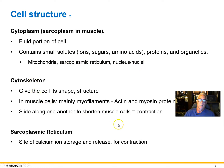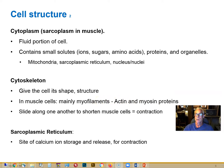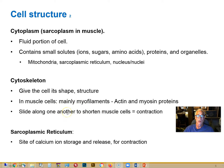The cytoskeleton gives the cell its structural integrity. The cell membrane is just a seal, but the cytoskeleton is the structural scaffolding of the cell. In muscle cells it's mainly myofilaments — actin and myosin — though other cytoskeletal proteins are found in other cells. The actin and myosin in muscle cells slide along one another using energy to shorten the cells. That's what a muscle contraction is: the so-called sliding filament theory of muscle contraction.